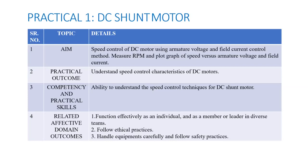For this DC shunt motor practical, the aim is to control the speed of a DC motor using two methods: armature voltage control and field current control. You have to measure the speed and plot graphs of speed versus armature voltage in one case, and speed versus field current in the other. The outcome is that you will be able to understand the speed control characteristics of DC motors.